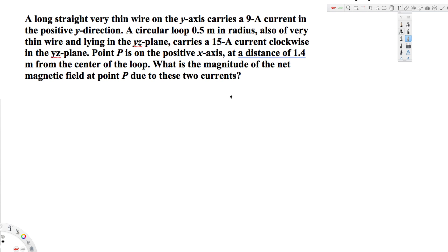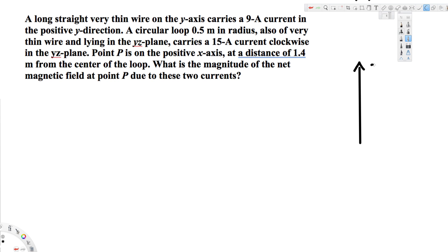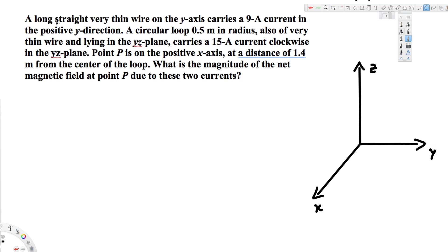Before we do this problem, let's draw a diagram to illustrate it better. We have the xyz axes — this is our z-axis, this is our y-axis, and this is our x-axis. The first sentence says a long straight very thin wire is on the y-axis, so let's draw that wire along the y-axis. This wire carries 9 ampere current.